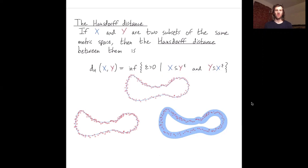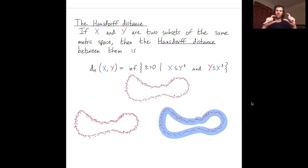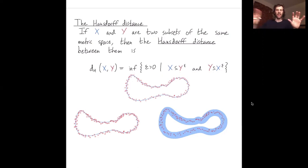So it's some notion of how far apart x and y are. Notice that I'm really using the fact that x and y are two subsets of the same metric space — x and y are pre-aligned. They're either nearby each other or not, and that determines how much you need to thicken.